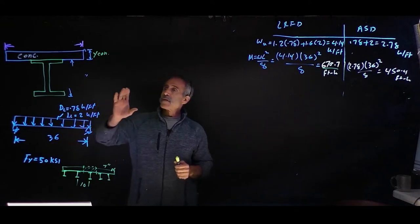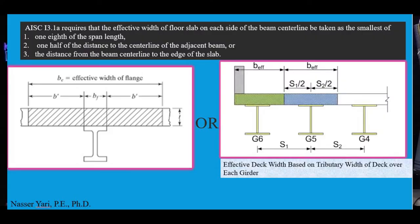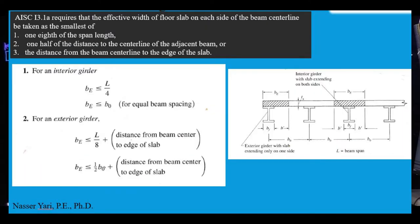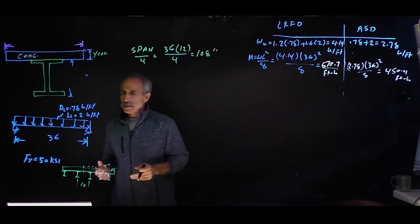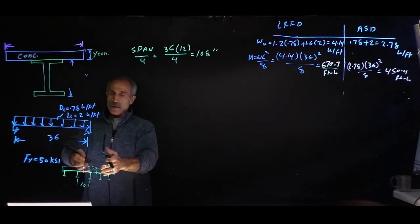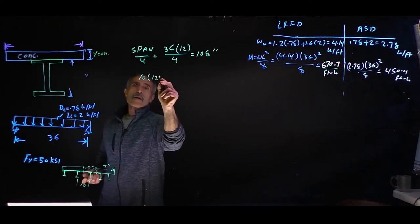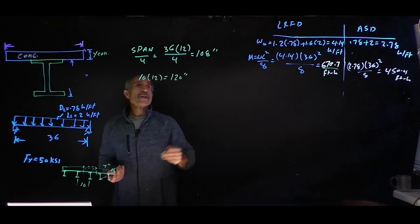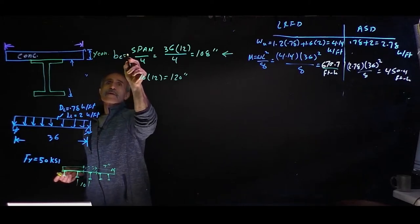First we're going to find the effective flange width. There's two different ways. First, span divided by 4, which equals 36 feet times 12 divided by 4 equals 108 inches. Second is the width between beams, which is 10 feet times 12 equals 120 inches. The lower controls, so we use 108 inches for effective width.